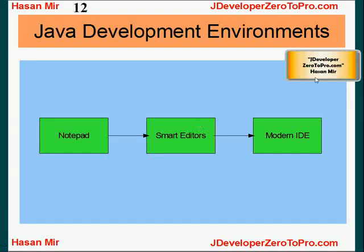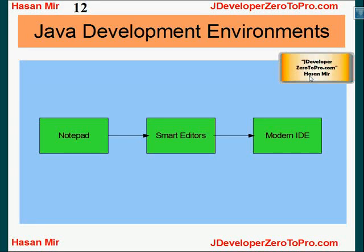When Java first came out, most Java programs were written in simple text editors like Notepad — or any text editor regardless of operating system. That was the first era: you would write a Java program in a simple editor, save it, pass it to the Java compiler, and it would run. The next era was smart editors, which provided syntax coloring for different keywords to make programs easier to read, and also handled indentation for if-then conditions and so on.